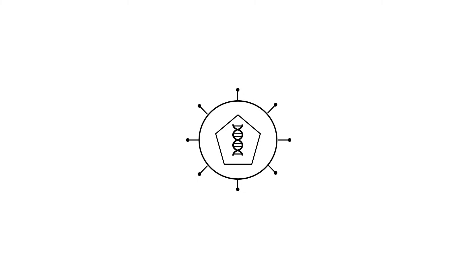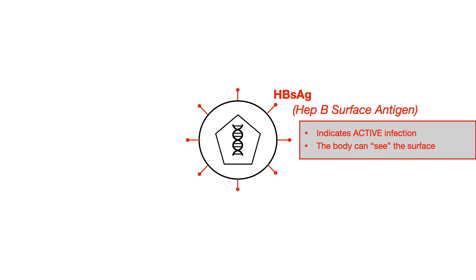The first antigen I want to point out is what you see in red. On the surface of the virus, you have the hep B surface antigen. The way that all of these shorthands are written out is: capital H, capital B, which stands for hep B, a little letter — in this case S for surface — and then AG means antigen. So HBsAg means hep B surface antigen. This is just the antigen that's on the surface of the virus, hence the name. The way you can think about this surface antigen is that it indicates active infection, because if the virus is floating in the body, the body can see the surface antigen, and therefore there's active infection.